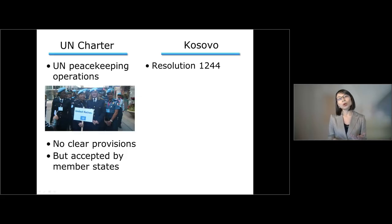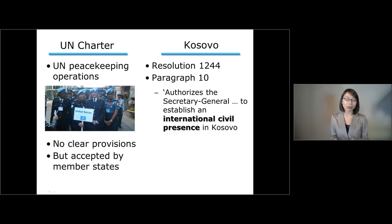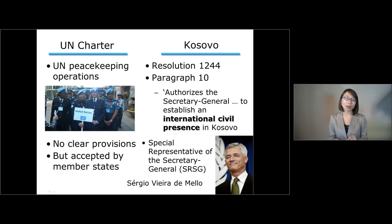In the case of Kosovo, under Resolution 1244, the Security Council authorized the Secretary General — at the time Kofi Annan — to establish an international civil presence in Kosovo, as opposed to a security presence. That international civil presence was ANMIC. In practice, Kofi Annan appointed a Special Representative of the Secretary General, known as SRSG. The first Special Representative appointed by Kofi Annan was Demelio, a respected Brazilian UN diplomat who was unfortunately killed in Iraq in 2003 during his mission there.